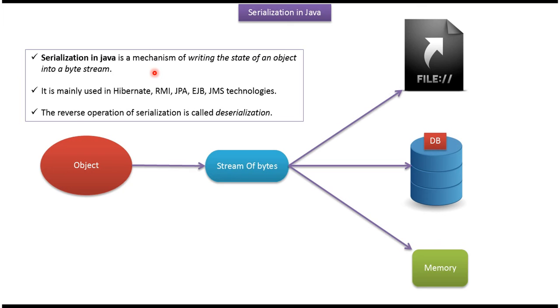Serialization in Java is a mechanism of writing the state of an object into a byte stream. Serialization is mainly used in Hibernate, RMI, JPA, EJB, and JMS technologies. The reverse operation of serialization is called deserialization.